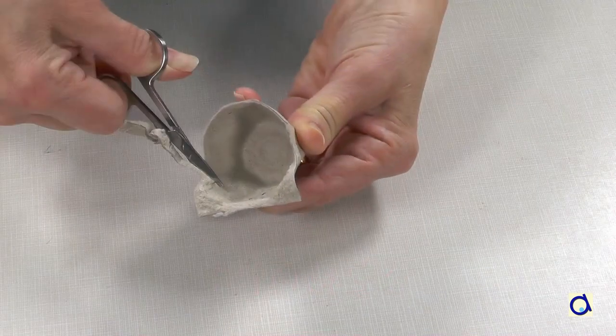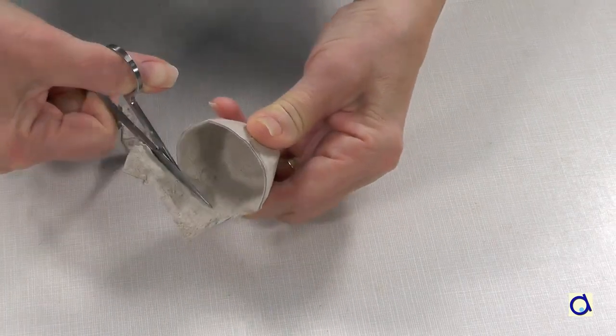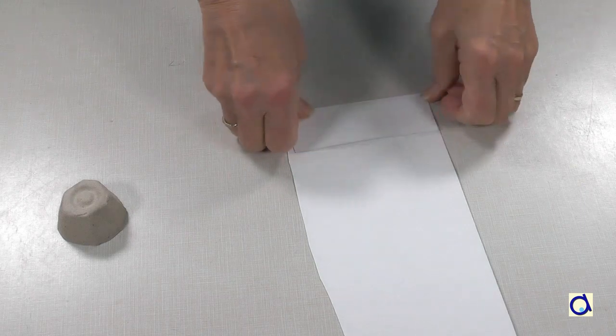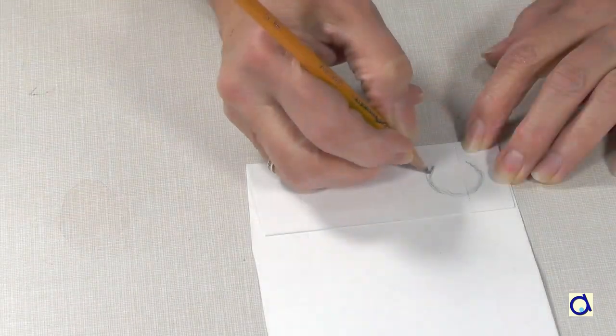For one mouse, you will need one egg carton cell. Take a piece of bristol paper and fold it in half. Trace an ear.